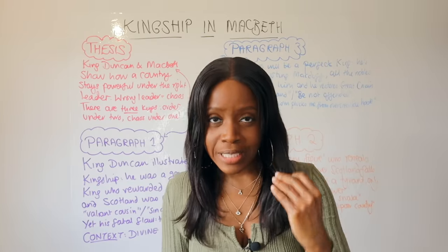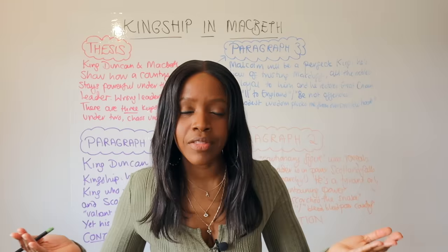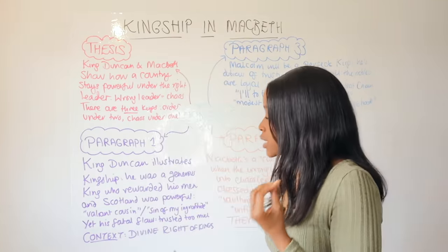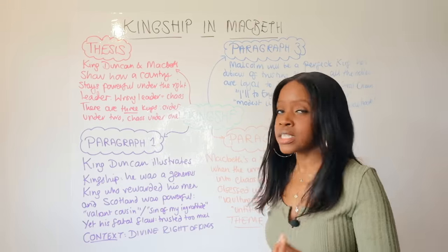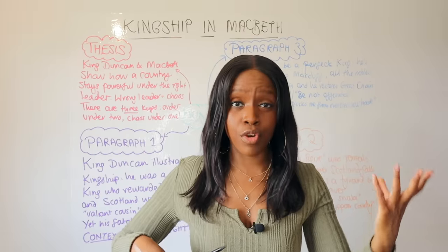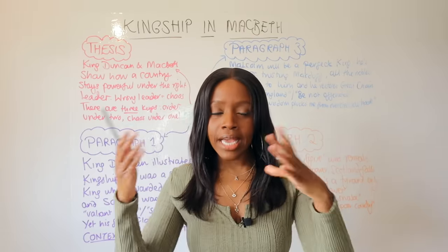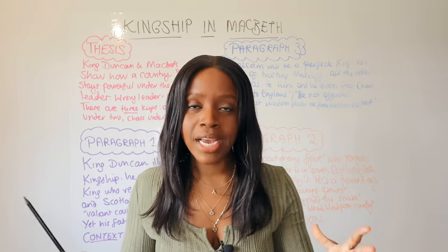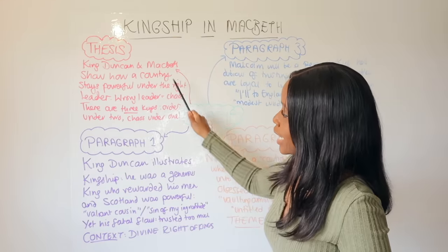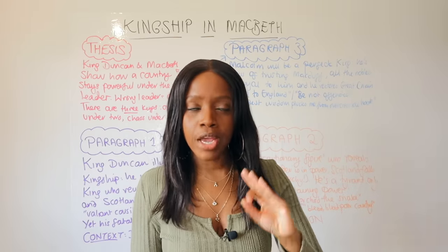Shakespeare was presenting this play to King James's court - King James being a new king at this stage. Shakespeare uses the idea of divine right of kings to tell the noblemen present - perhaps some thinking of overthrowing King James - not to do so, because England and the United Kingdom by extension would fall into chaos, much like Scotland fell into chaos under the wrongful king not chosen by God.